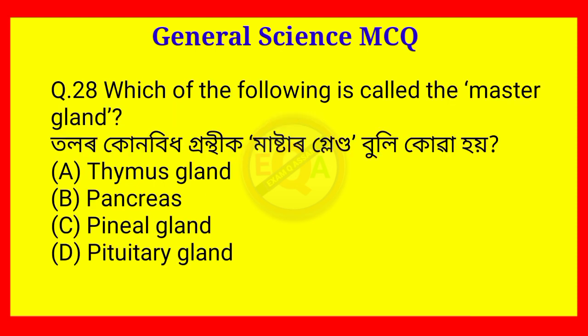Question number 28. Which of the following is called the master gland? The answer is Option D — Pituitary gland.